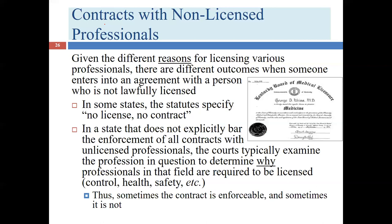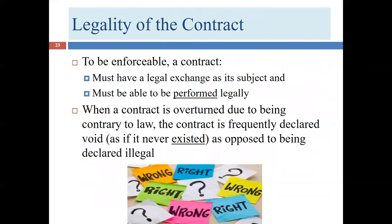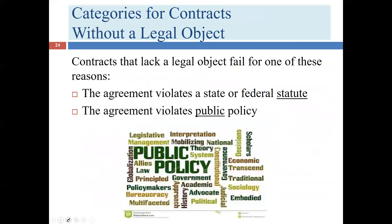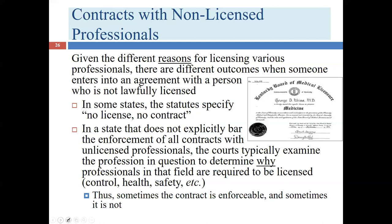I might respond that there's a problem with this contract theory: there are four elements to a contract — maybe there was an agreement, consideration, and legal capacity — but there was no legal object, because I really wasn't a doctor and I was actually violating a state law when I provided medical guidance. So while there's nothing wrong with providing medical services generally, I was performing that illegally, so we don't have the fourth element and therefore no enforceable contract.